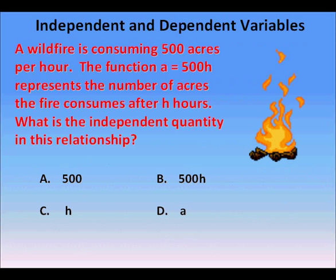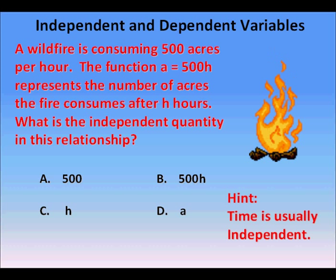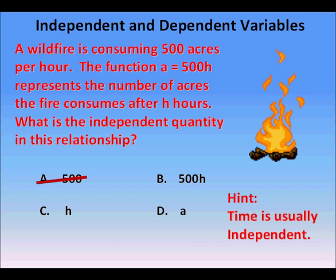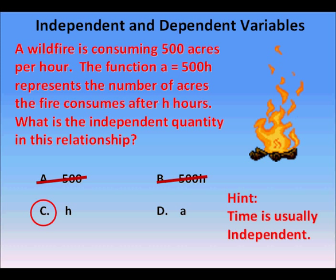Let's look at another problem. A wildfire is consuming 500 acres per hour. The function A equals 500h represents the number of acres the fire consumes during h hours. Which is the independent quantity in this relation? As a hint, time is usually independent. The answer is h — a number like 500 is not a variable or unknown quantity, and 500h is not an independent quantity either. The amount of acreage burned depends on the number of hours, so h is the independent quantity.